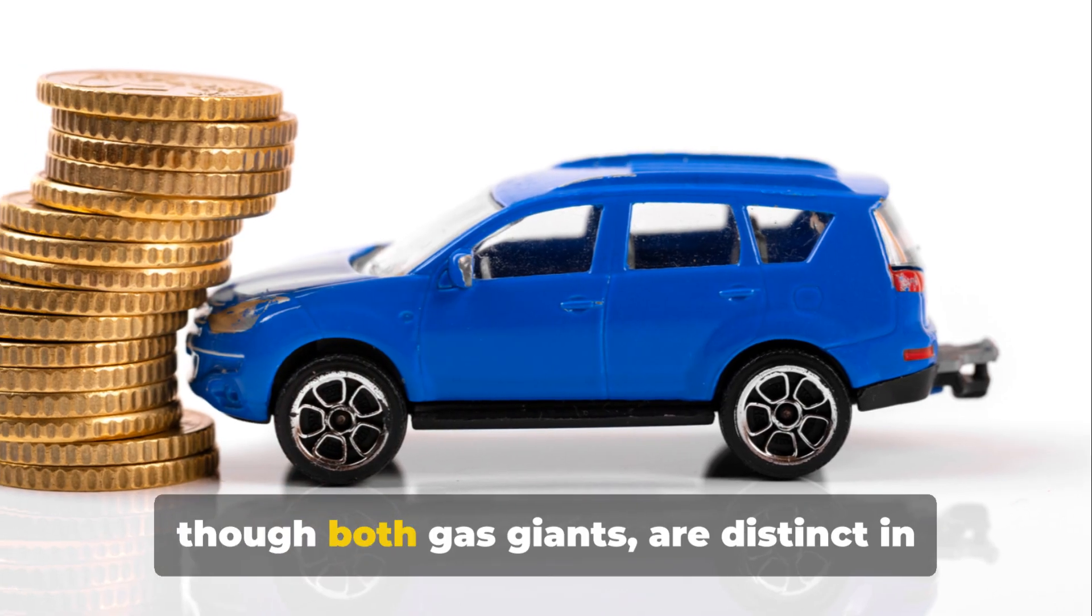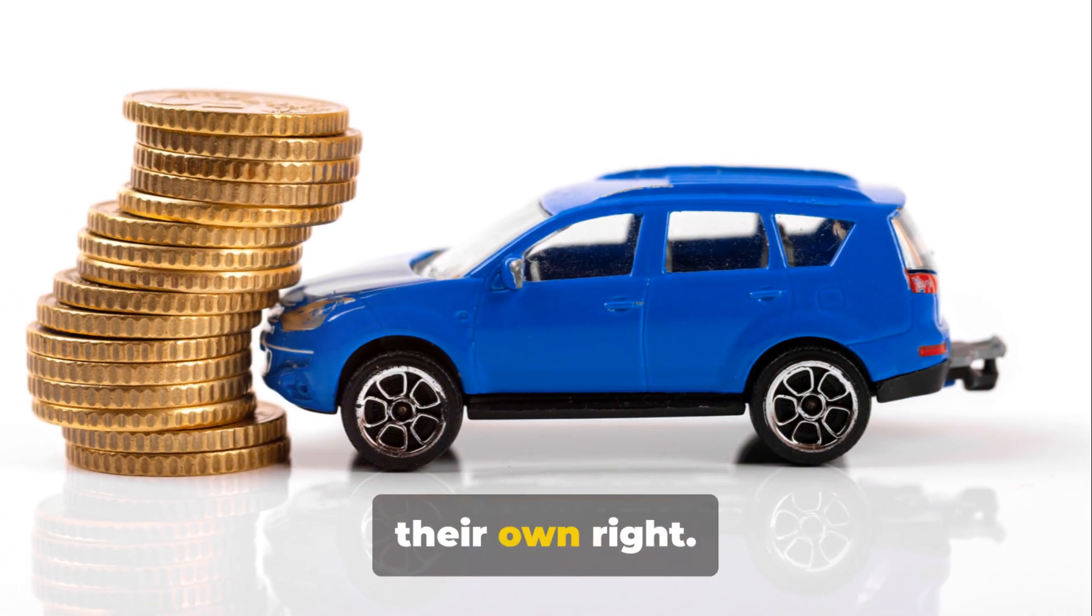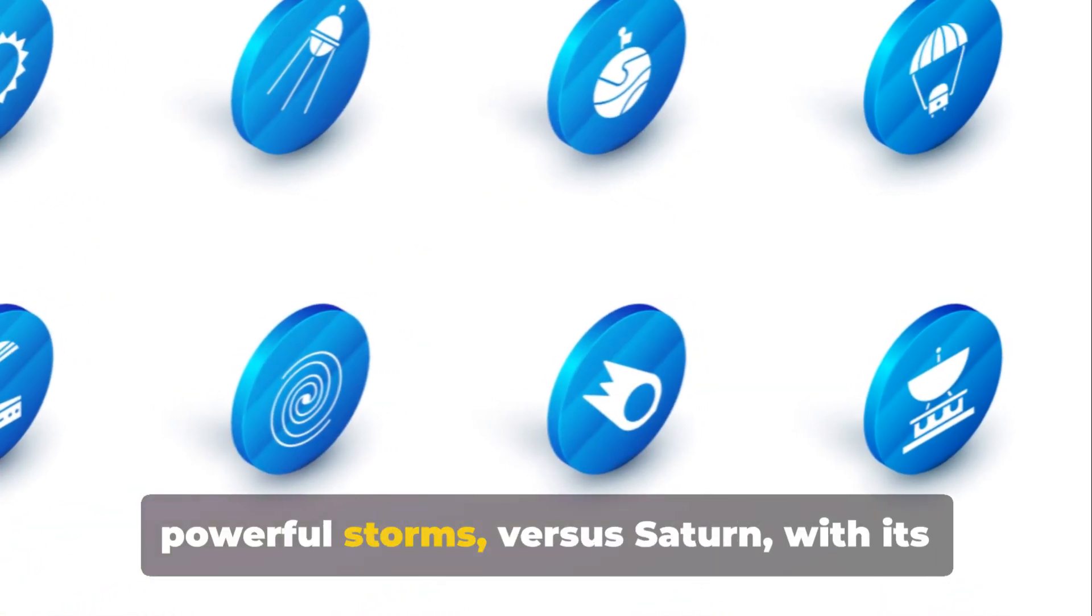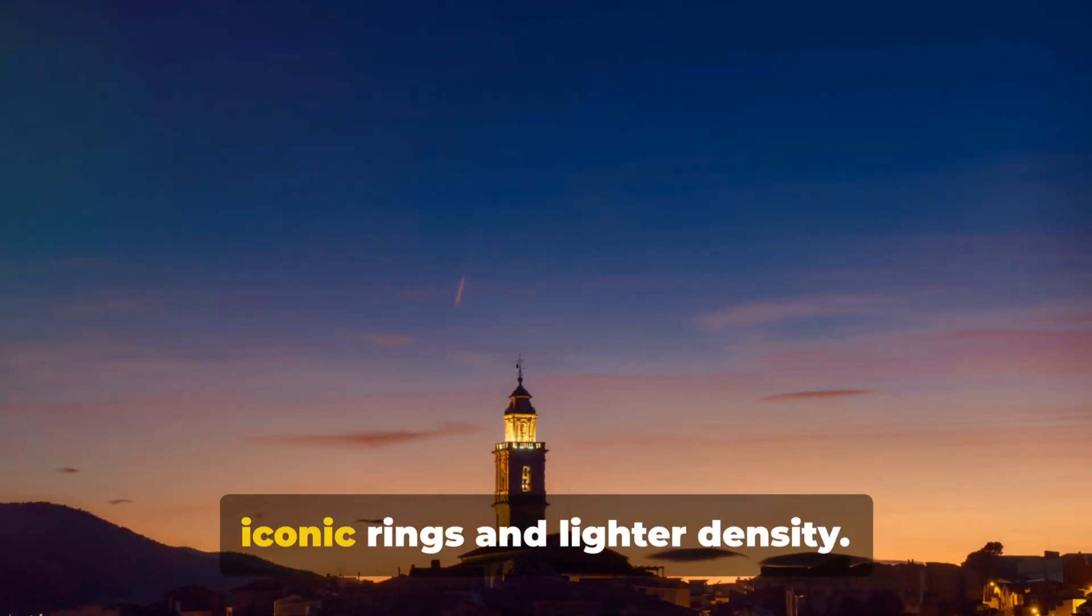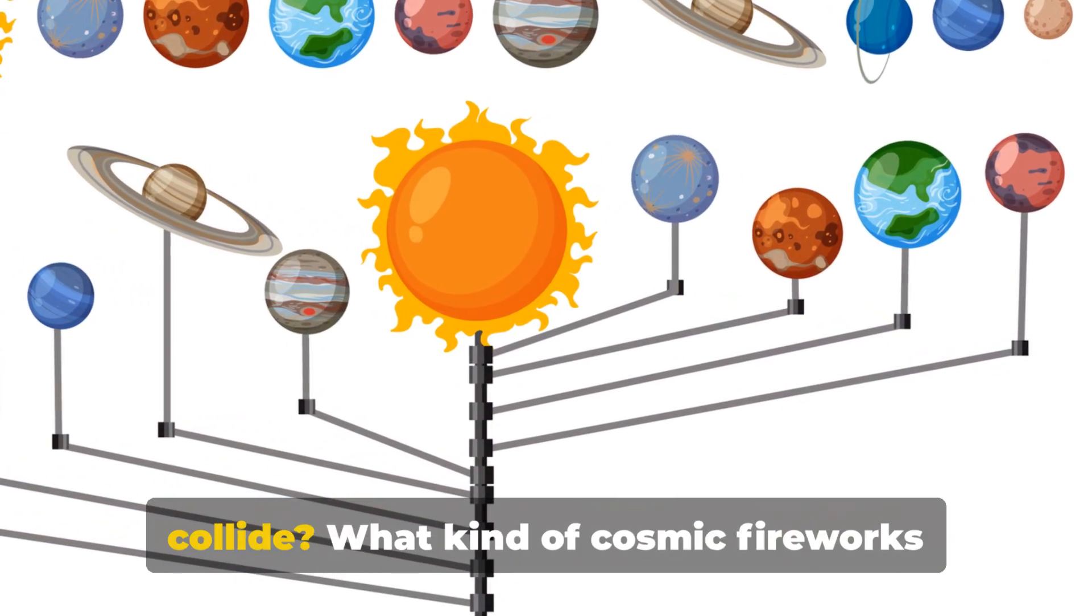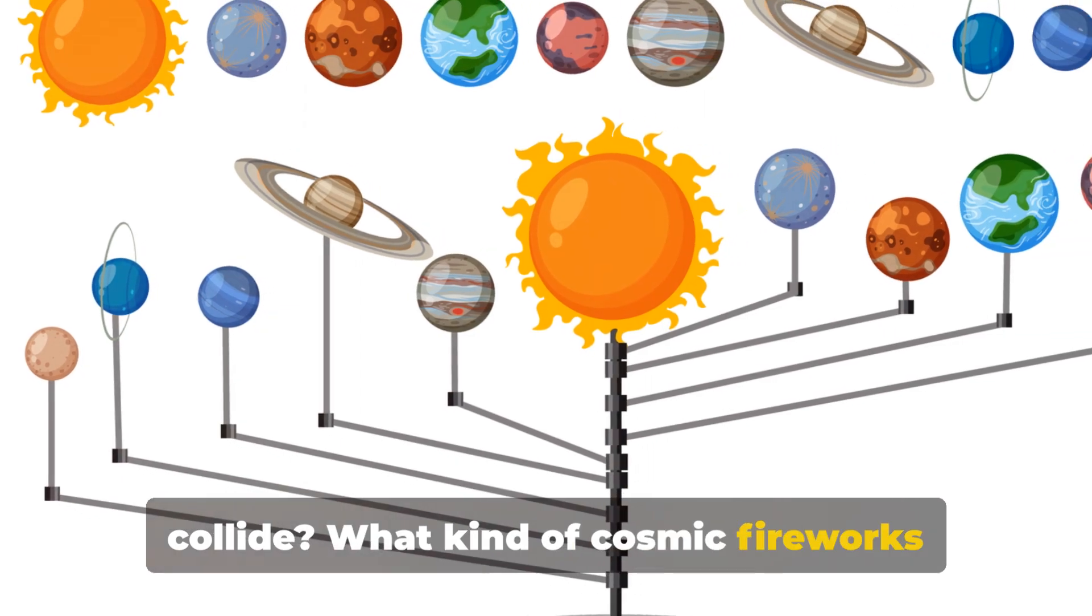The two planets, though both gas giants, are distinct in their own right. Jupiter, with its massive size and powerful storms, versus Saturn, with its iconic rings and lighter density. Yet what if these two titans were to collide? What kind of cosmic fireworks would we witness?